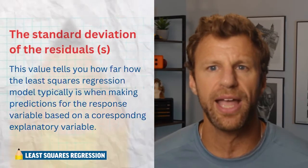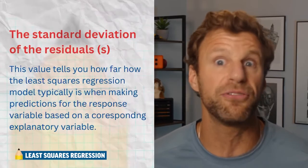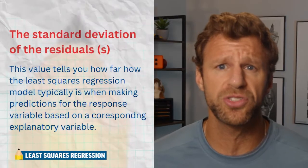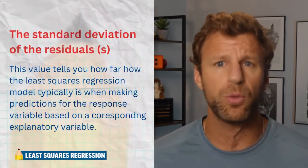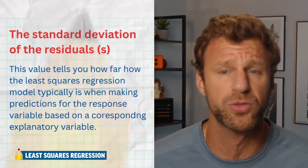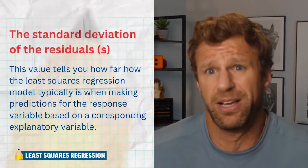You really have to take context into account. For example, if you're trying to predict the weight of an elephant and your standard deviation of the residuals is five pounds, that's actually really good — you're typically off by five pounds when predicting an animal that weighs tons. But if you're trying to predict the weight of a rabbit and your standard deviation of the residuals is five pounds, that means you're way off because rabbits don't weigh a whole lot. Smaller S values are better, but you have to account for context — five might be small for elephants, but certainly not for rabbits.